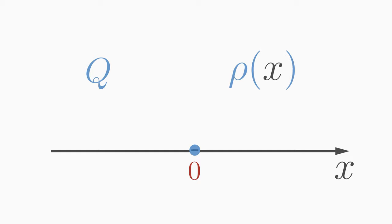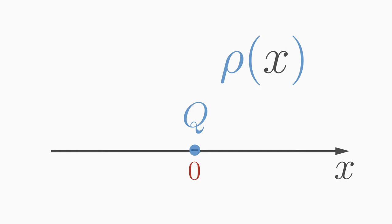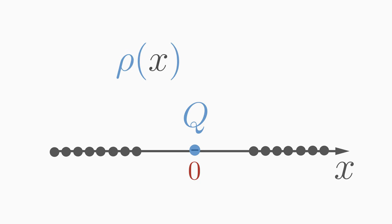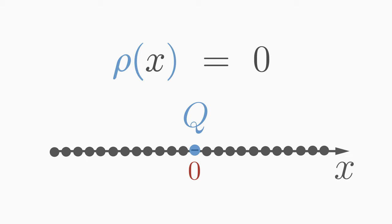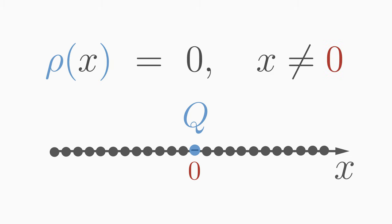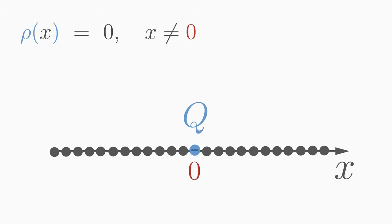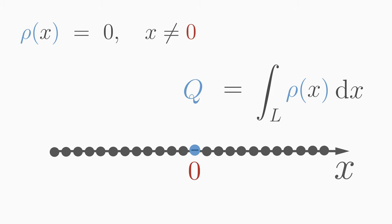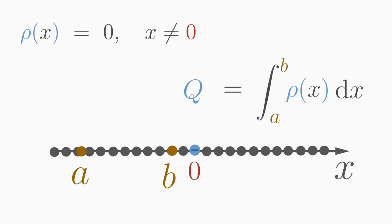What properties must the charge density have to describe a point charge? The charge density must fulfill two properties. First, it must be zero at every position x except at the position where the point charge is located, that is at x equals zero. Second, the line integral over the charge density must yield the value Q of the point charge when integrating between two points A and B that include the point charge. If we integrate over a region where the charge Q is not present, the integral should yield zero.